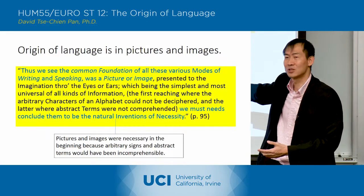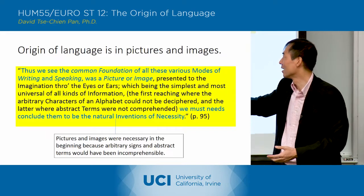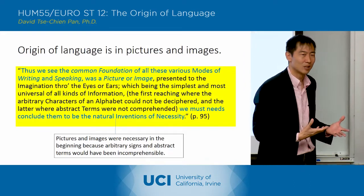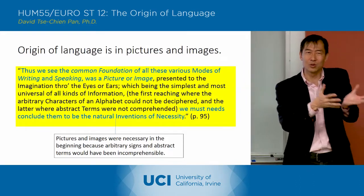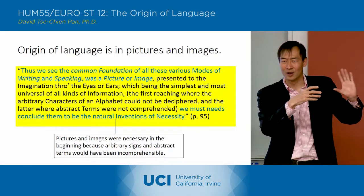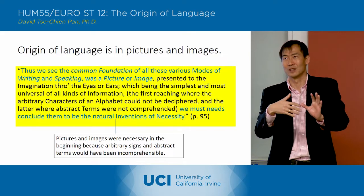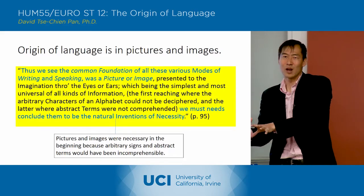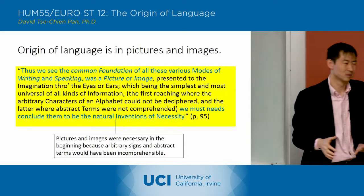He's saying that pictures and images were necessary in the beginning because those arbitrary signs would have been incomprehensible, but you can get to those arbitrary signs through this sort of passage from actions, then to apologues, the proverbs, and then the similes and metaphors.